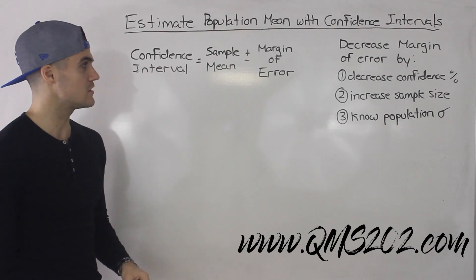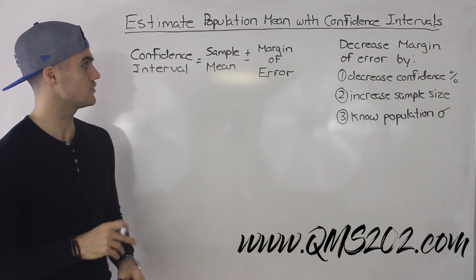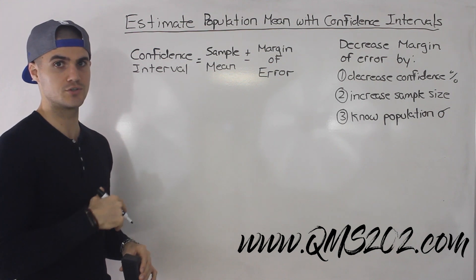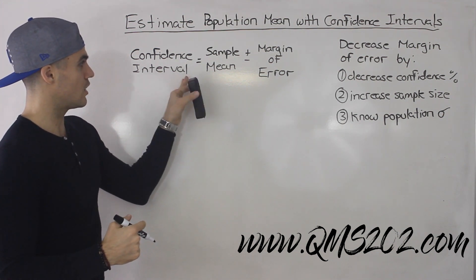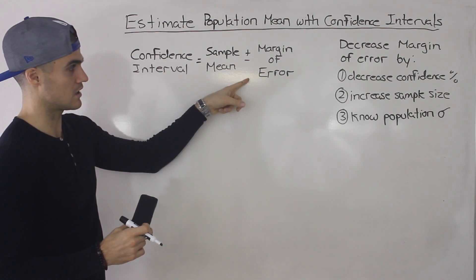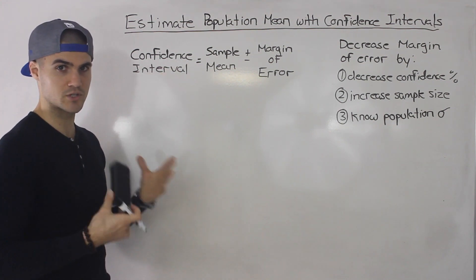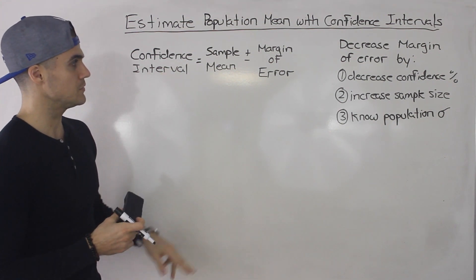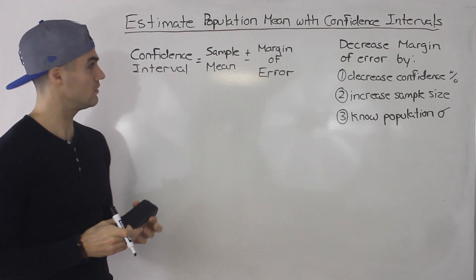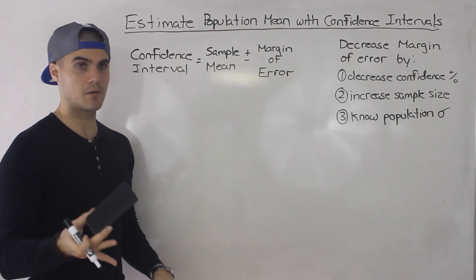Welcome back. Moving on to the next video where we're estimating the population mean with confidence intervals. As a quick review of the previous video — which I highly recommend you watch before this one — a confidence interval is basically the sample mean plus or minus something called the margin of error. We went over how confidence intervals work and the intuition behind them, and then talked about how we can decrease the margin of error to get a better estimate of the population mean. We came up with three strategies.